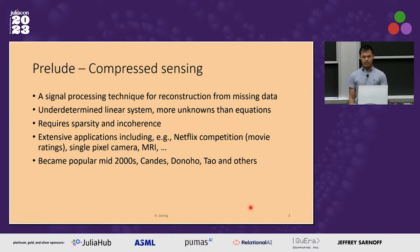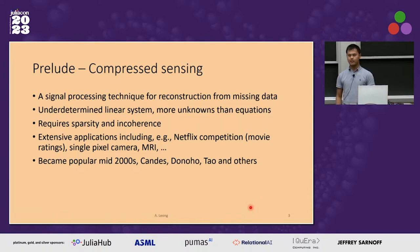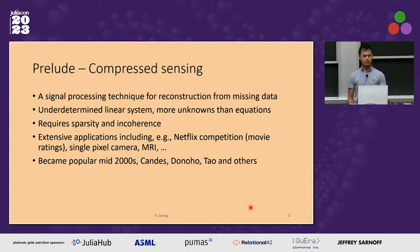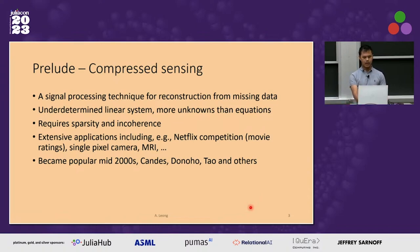A single pixel camera is another application. Obviously your digital cameras are all CMOS-based sensors, and you might think, who cares about using compressed sensing when things scale up. But when it comes to more niche applications where we are sampling beyond the visible spectrum, that's where these applications may be interesting. And then obviously there's MRI and a lot more.